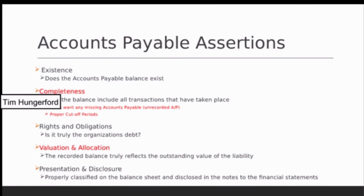Applying audit assertions to accounts payable: existence asks whether the accounts payable balance actually exists. More importantly, completeness asks whether everything has been included — you'll be searching for unrecorded accounts payable. Cutoff is also critical: when reviewing invoices across a December/January period boundary, you need to ensure the portion belonging to each year is recorded in the correct period.